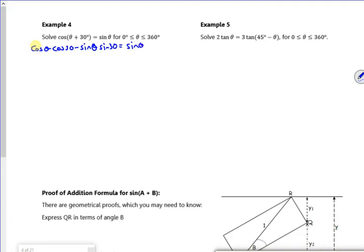Right, so we know cos 30 is root 3 over 2, so all I'm doing is working out what I can do. Sin 30 is a half. Now I want to solve it.